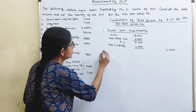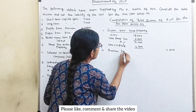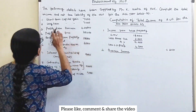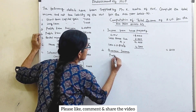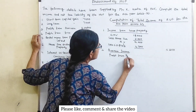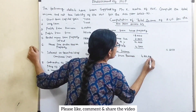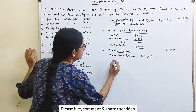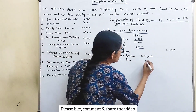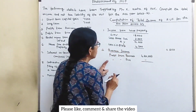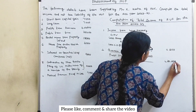Income from business. Profit from business is 4,20,000. Then profit from firm — that is 20,000, which is an exempted amount. So the total income from business is 4,20,000.